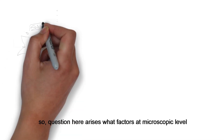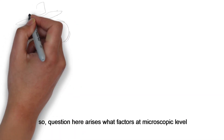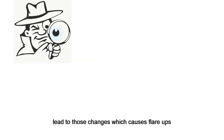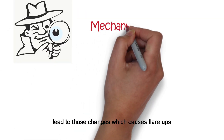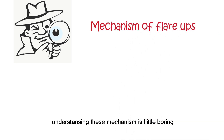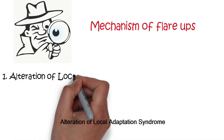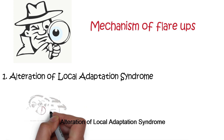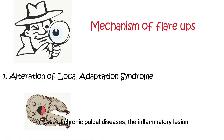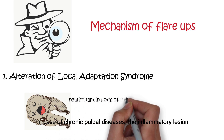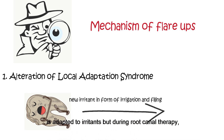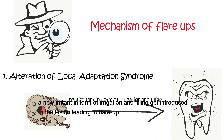The question arises: what factors at the microscopic level lead to changes which cause flare-ups? Understanding these mechanisms is a little boring, but let's start from alteration of local adaptation syndrome. In cases of chronic pulpal diseases, the inflammatory lesion is adapted to irritants, but during root canal therapy, a new irritant in the form of irrigation and filling gets introduced into the lesion, leading to flare-ups.